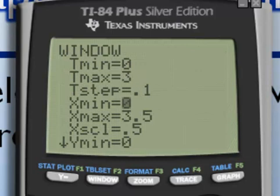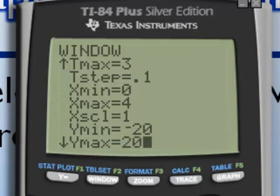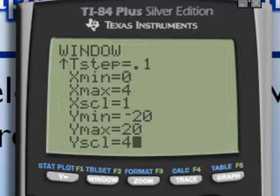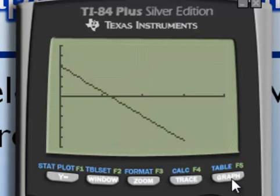I'll go immediately to the window and adjust the window settings. The time settings are already okay. The X settings are a little different. They go from 0 to 4 by 1s. And the Y values went from -20 to positive 20 by 4s. And if I hit graph, you can see the velocity versus time graph.